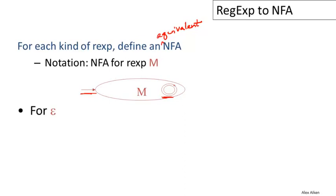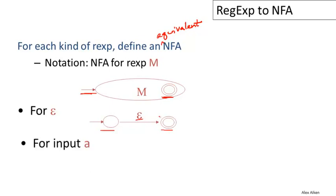For the epsilon regular expression, we just have a start state and a final state with an epsilon transition between them. This machine accepts exactly the empty string. Similarly, for a single character 'a', we can define a one-transition, two-state machine that accepts that one character. From the start state, we move to the final state if and only if we read that particular character.